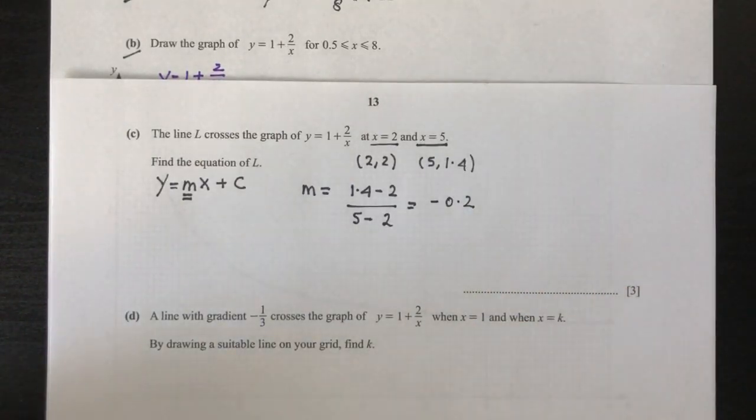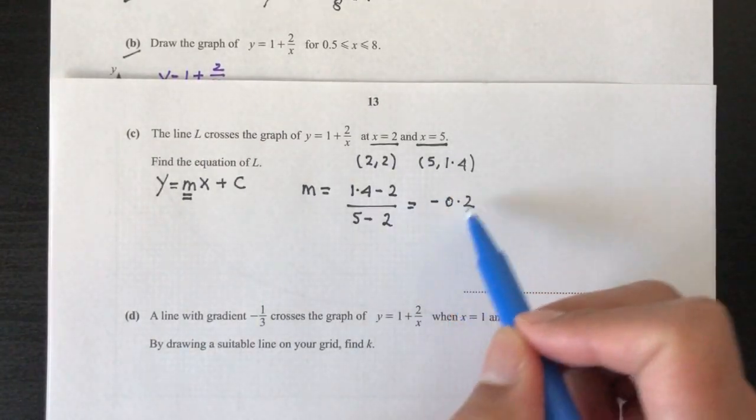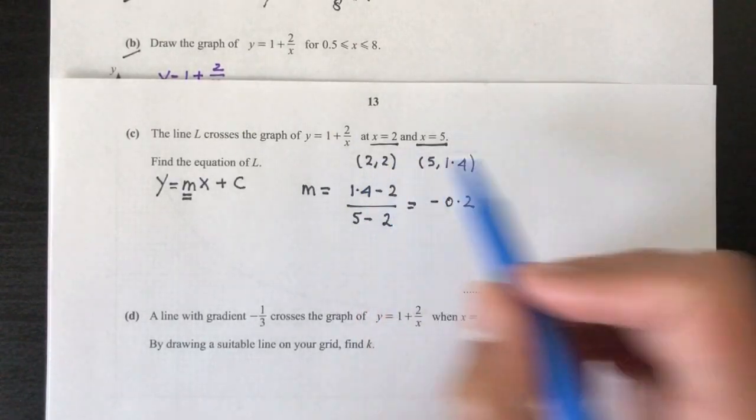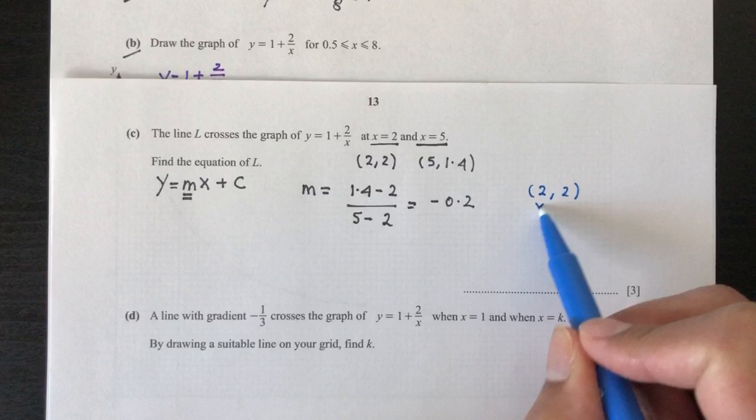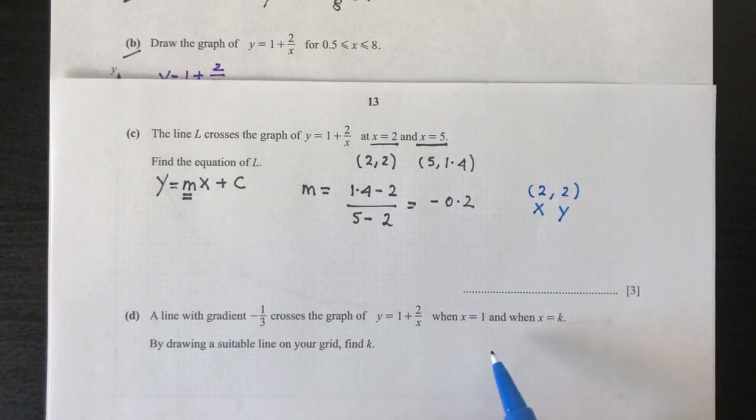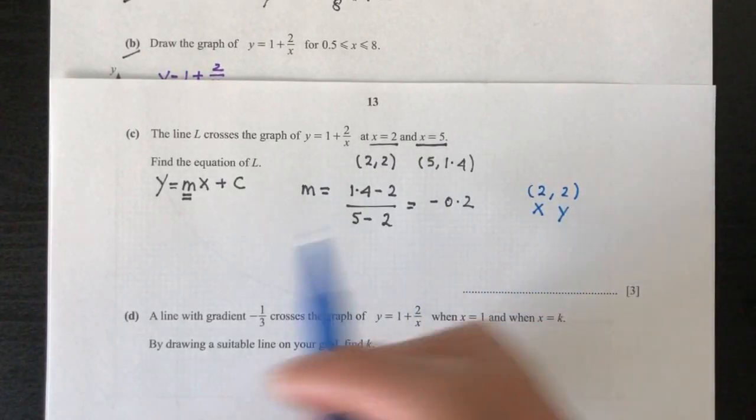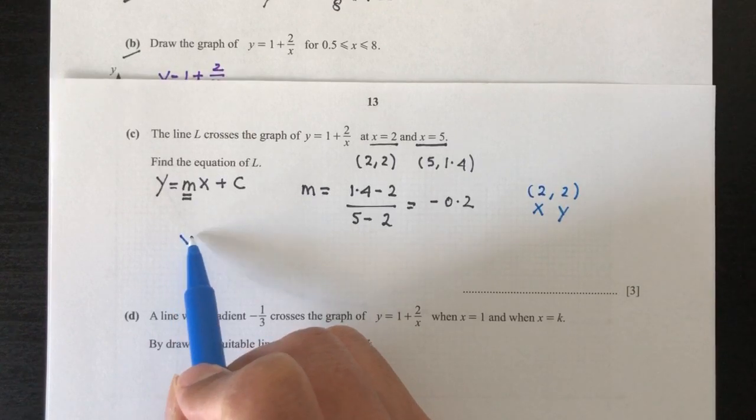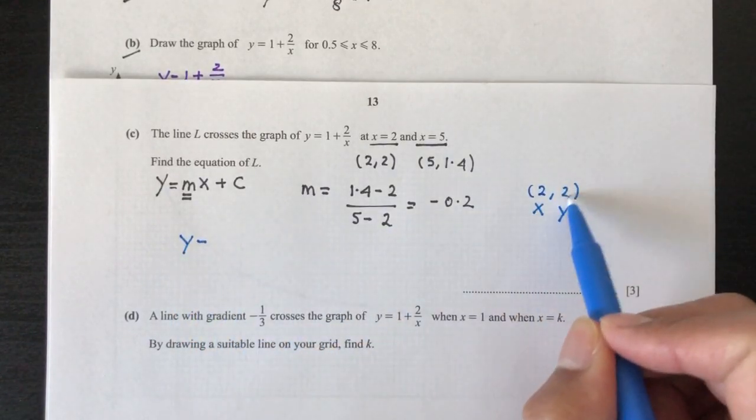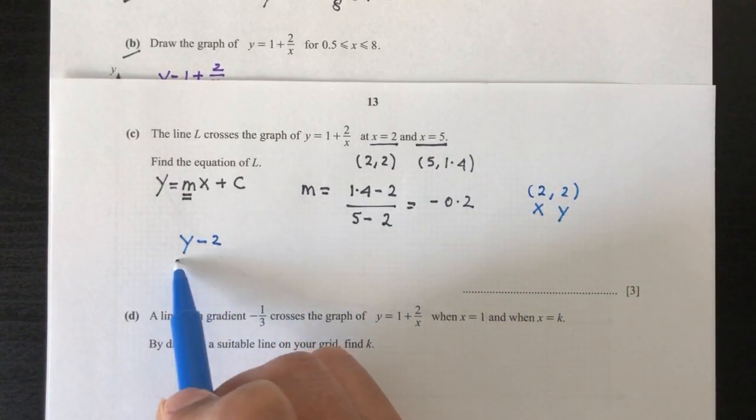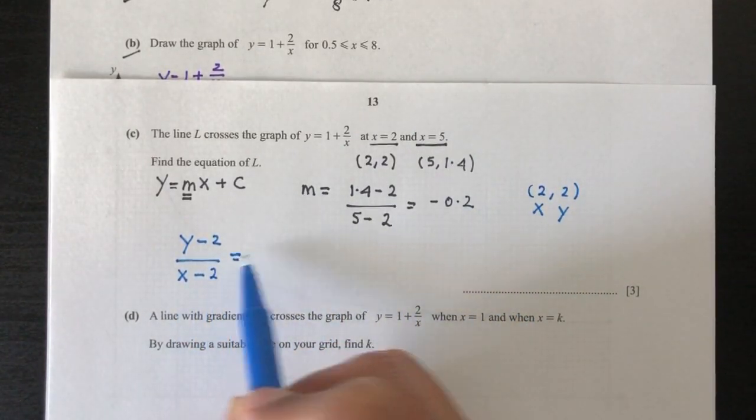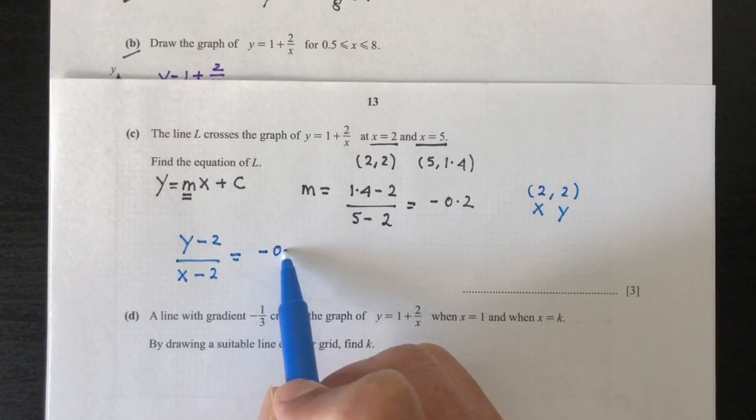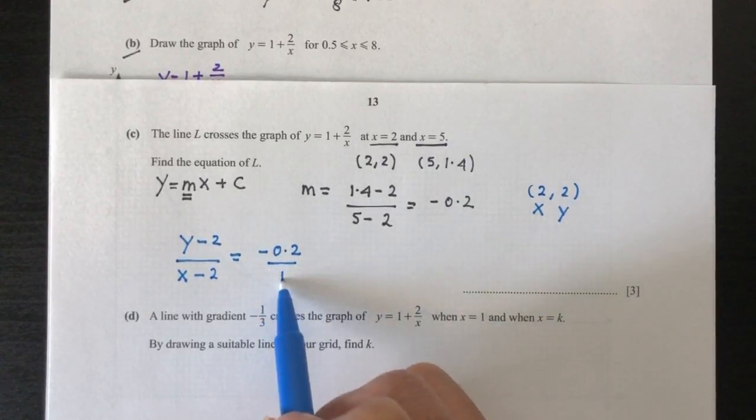So now to find the equation of line L, we have to use the gradient and one of those two points. Let's choose this one, (2, 2). This is your x coordinate and this is your y coordinate. So to write the equation, on top you have to write y minus this value over x minus this value, equals the gradient -0.2, which is over 1.